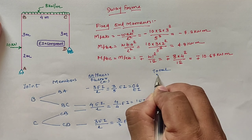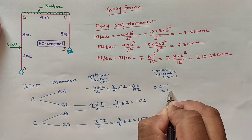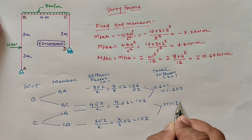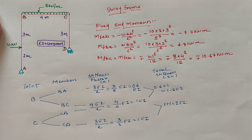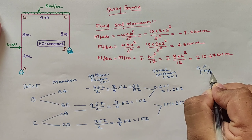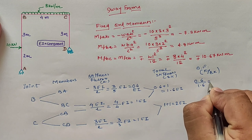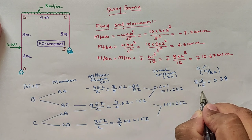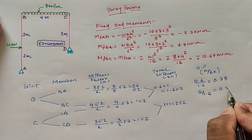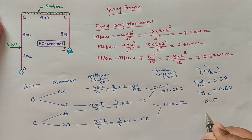Going ahead for the total stiffness: per joint B it is 0.6 + 1, which is equal to 1.6EI, and for joint C, our value is 1 + 1, which is equal to 2EI. Now going ahead for the distribution factor, defined as the ratio of individual stiffness to total stiffness: for span BA, 0.6/1.6 equals 0.38, and 1/1.6 for BC span equals 0.62. For joint C, stiffness values are equal, hence the distribution factor is 0.5 for both CB and CD spans.